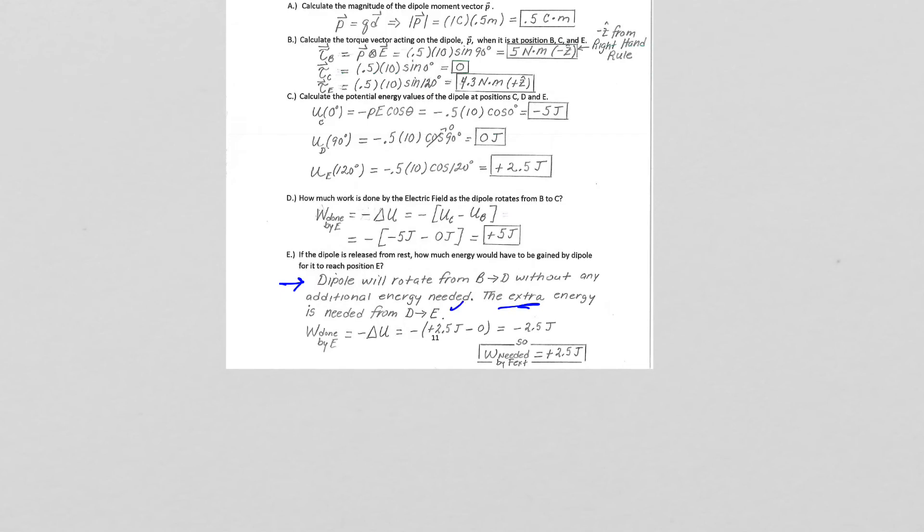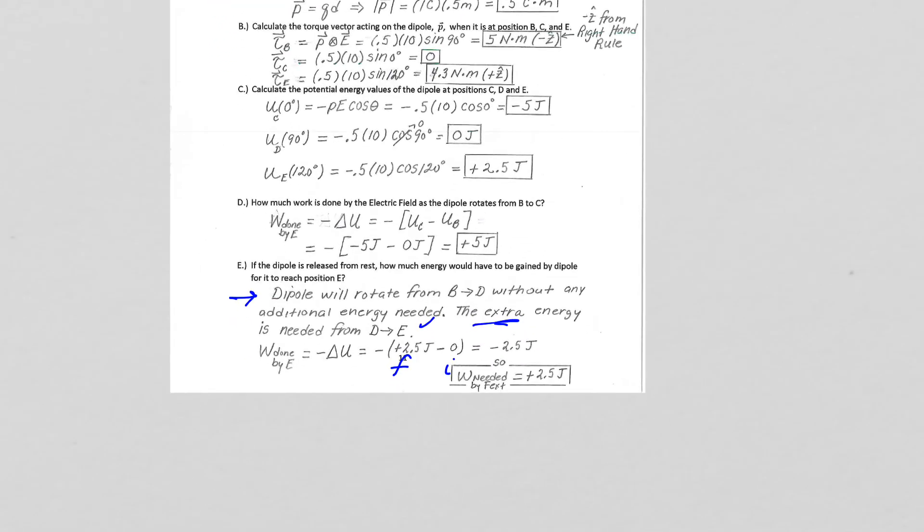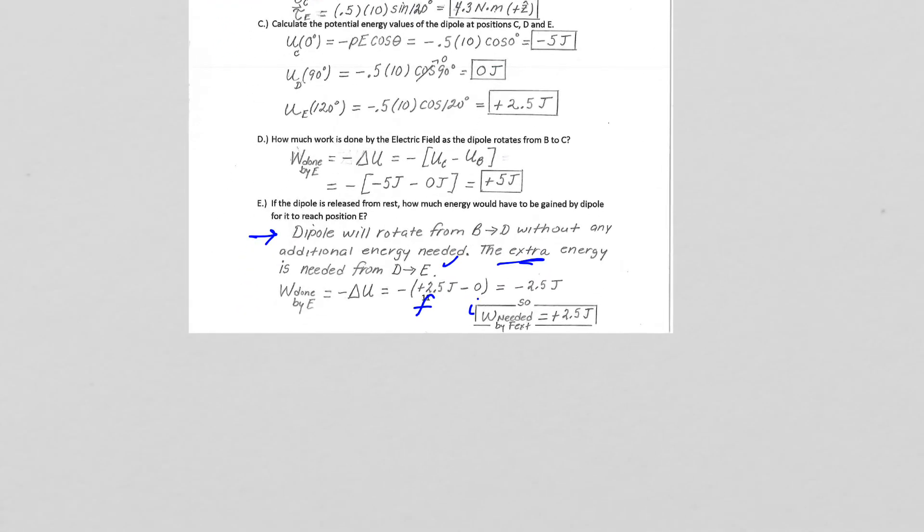The extra energy comes when we need to go from D to E. Well, let's just look at D to E. So if my final is going to be at position E minus my initial at position D, zero joules of potential energy down here because we still have that 90 degree angle between the P and the E vector.